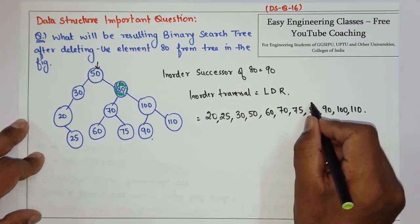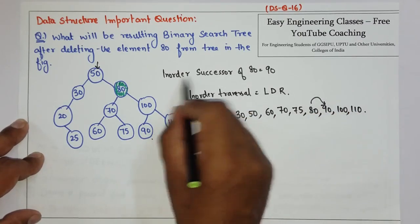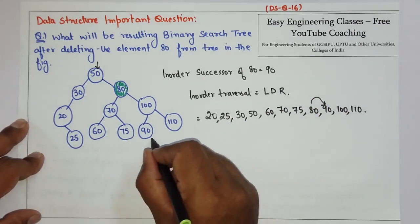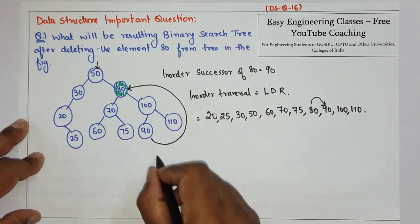The element which is occurring just after 80 is 90, so the inorder successor of 80 is 90. So what you have to do is replace this 90 with this 80 and delete or remove this node.